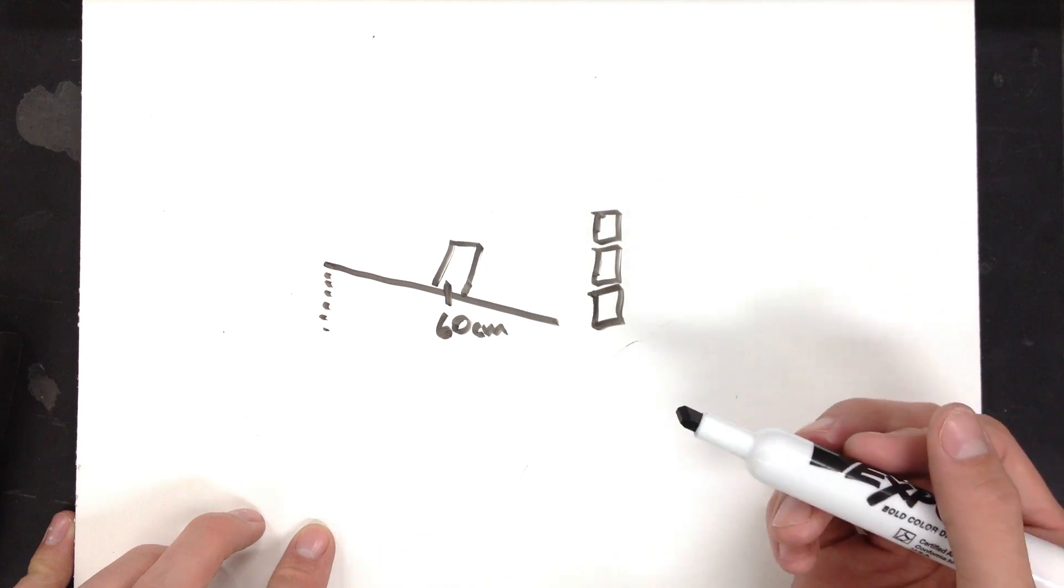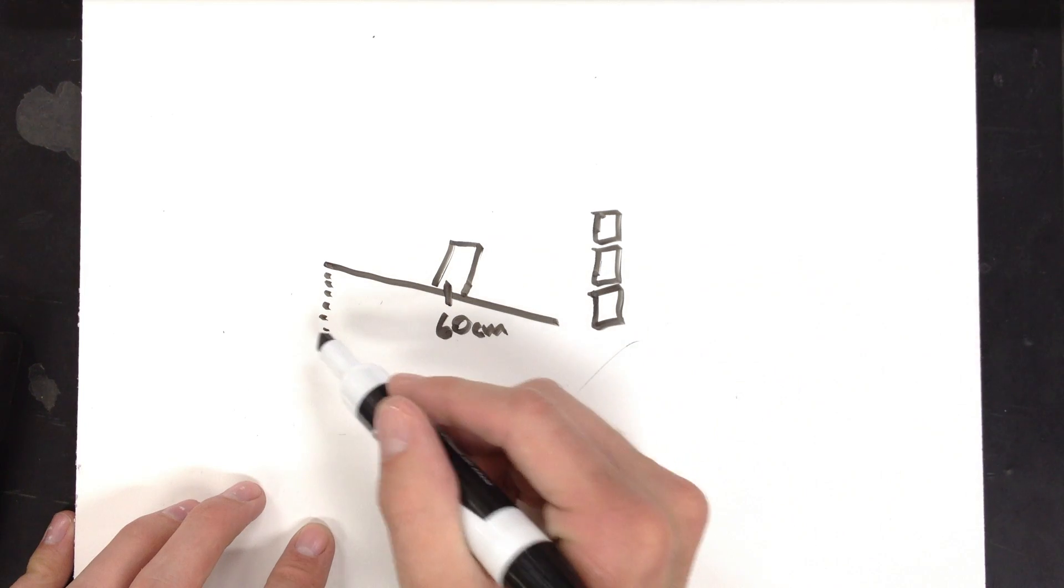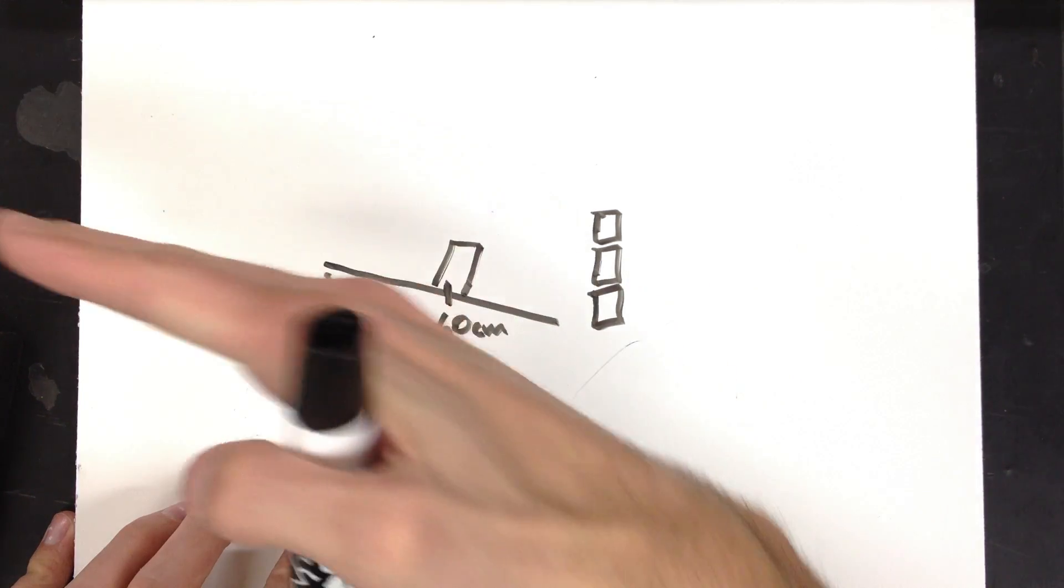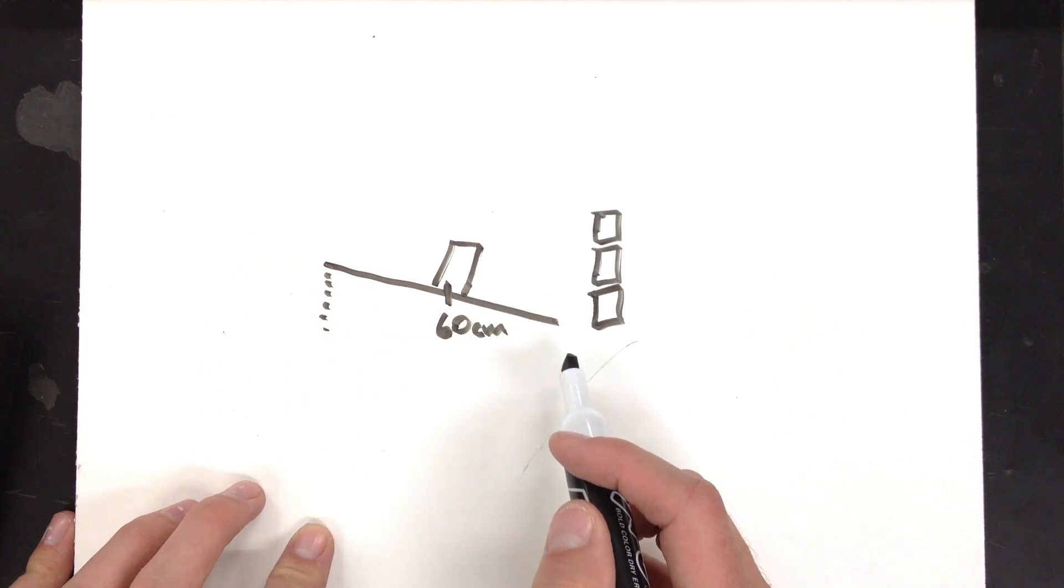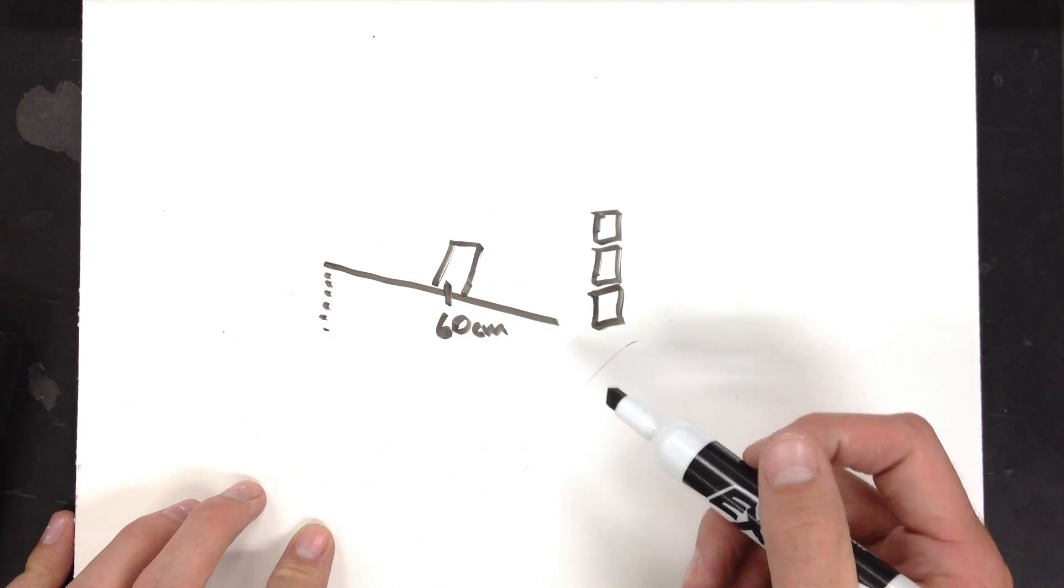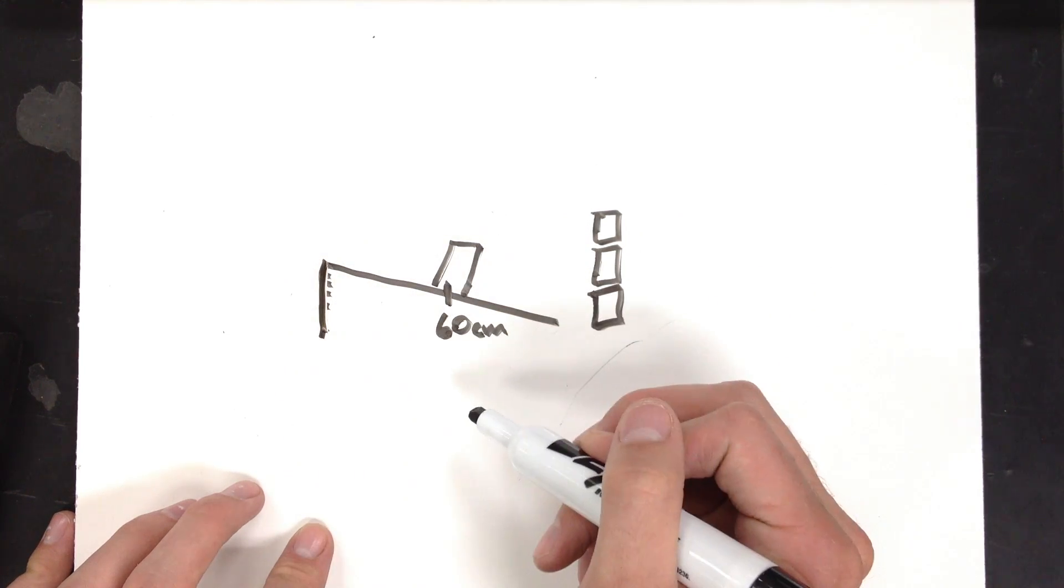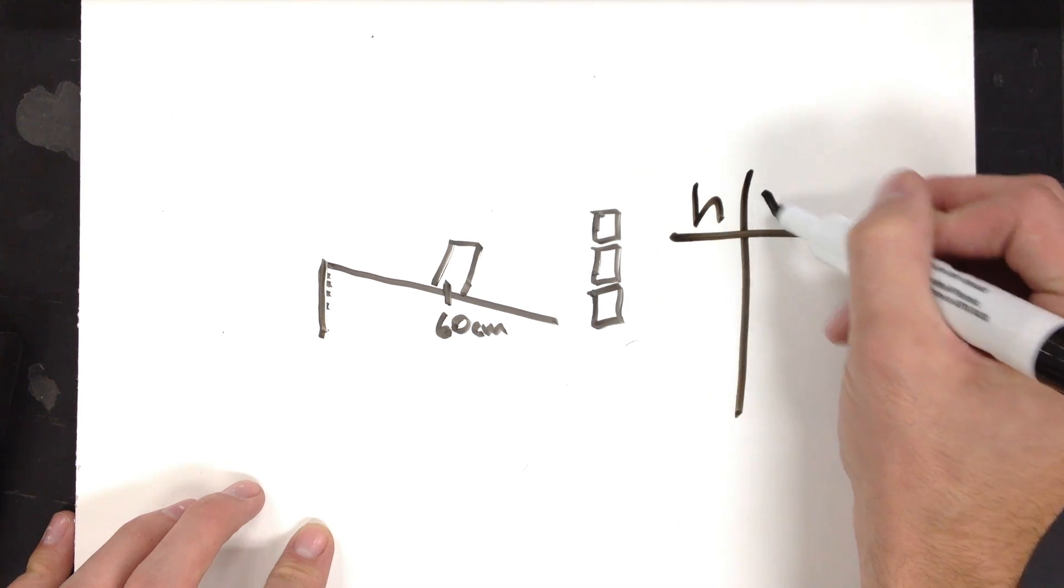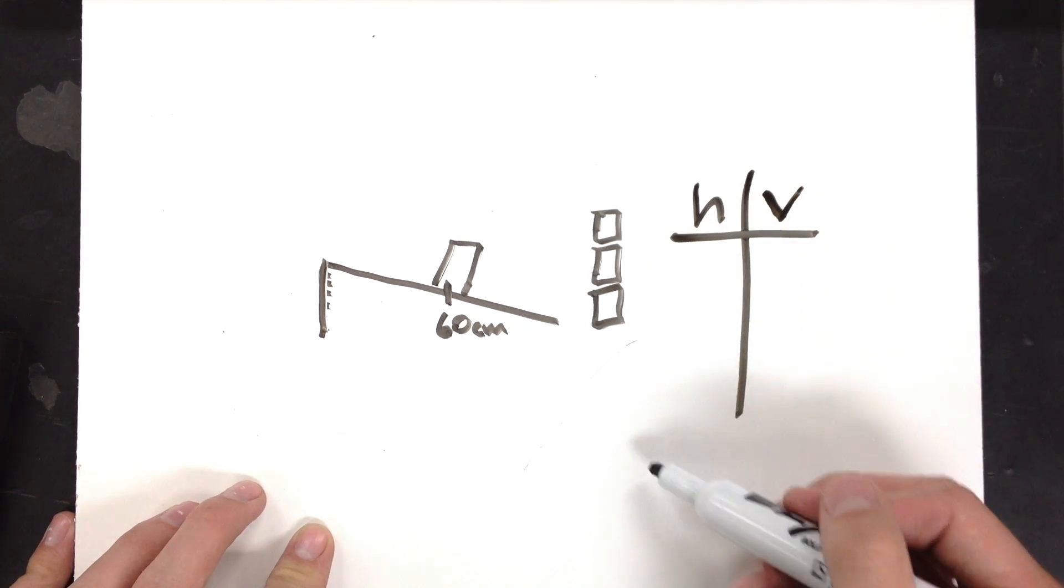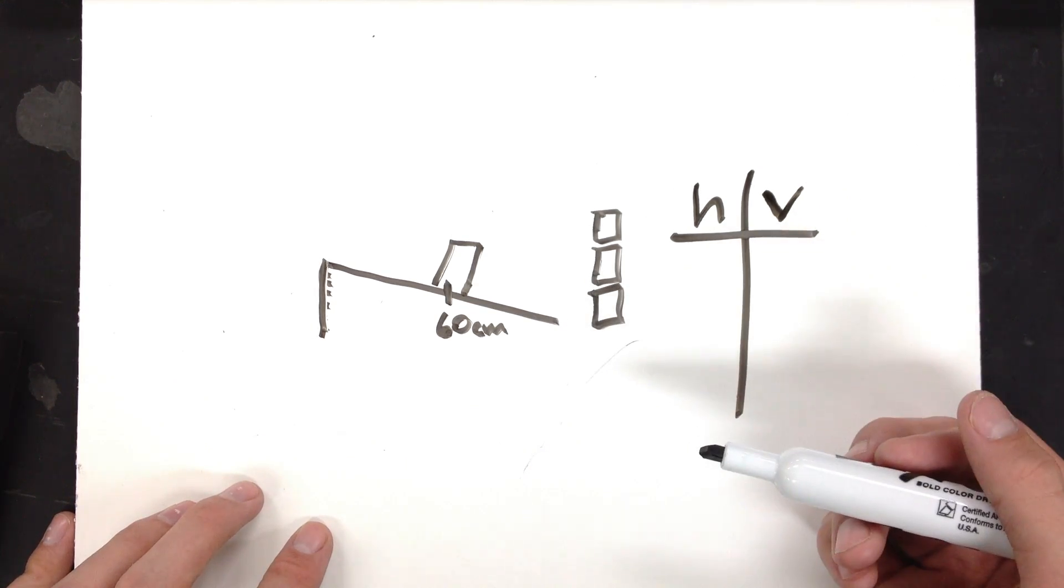What you also need to keep in mind is that as you increase this height, you're also changing that angle. You're making this slope steeper. What you're going to do is measure this height, h. And you're going to record that data. h is going to be what you are changing, so we can make that our independent variable.